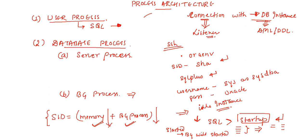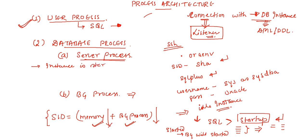Whenever someone is triggering a SQL query, a user process is being generated. One process known as the listener process establishes a connection with the database instance for the first time for the user process. Second is the database process - among database processes we have the server process, which is very important and helps in database connectivity. It is created when the Oracle instance is started and a user establishes a connection. Keep in mind: when the instance is up and running, and when the user establishes a connection, the server process will be initiated.